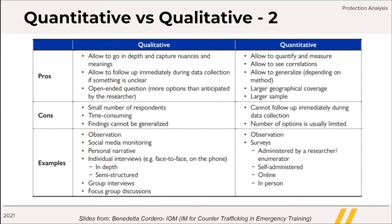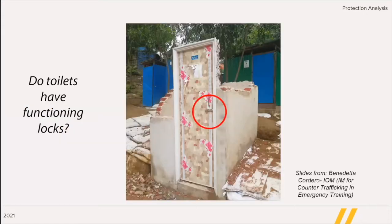Other methods are called quantitative. They allow to quantify and measure, allow to see correlations. Some allow to generalize the results to the whole group, depending on the methodology used. It is easier to achieve a larger geographical coverage and a larger sample with quantitative methods. However, the number of answer options and nuances are usually limited and you cannot modify the question immediately during data collection. For example, we were asking if latrines had a functional lock as a proxy for GBV risk, but there was nothing in the questionnaire about the latrine having no walls or the lock being on the outside.